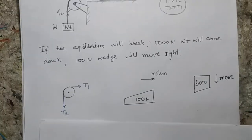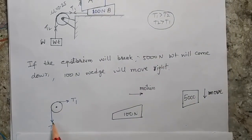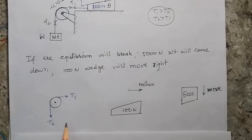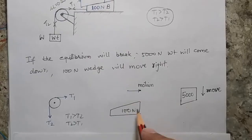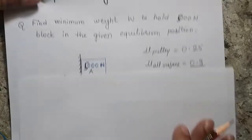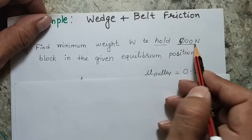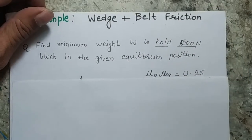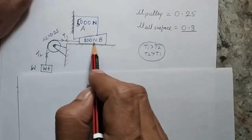Let's start solving the problem. There are three things to keep in mind: first, the pulley where we have tensions T1 and T2 — we need to determine which is greater. Second, there is a wedge and a block. Since the question asks us to hold the 5000 Newton block, we need to define the direction of friction on each surface.